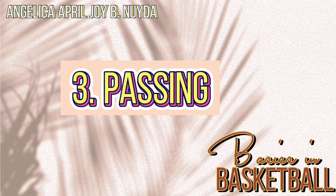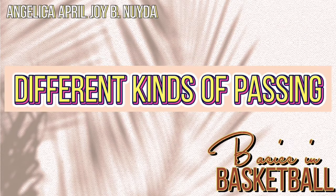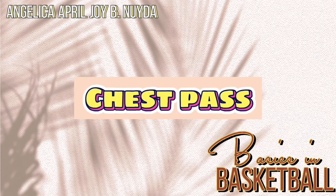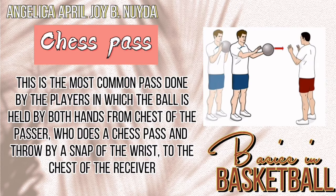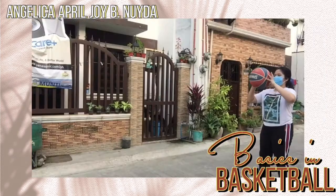3. Passing. Different kinds of passing. Chest pass: This is the most common pass done by players, in which the ball is held by both hands from the chest of the passer, who throws it by a snap of the wrist to the chest of the receiver.